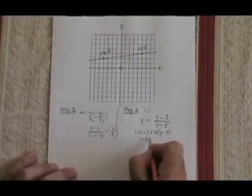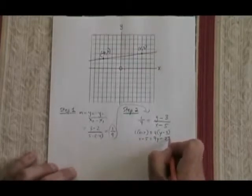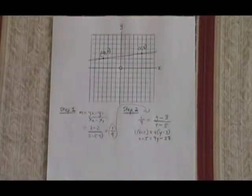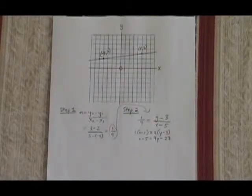This becomes x minus 5 equals 9y minus 27. The last step is to give the equation in the form ax plus by plus c equals 0, which is one of the acceptable forms for the straight line equation.